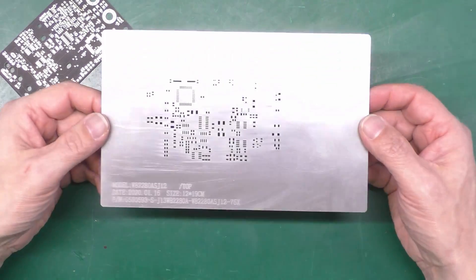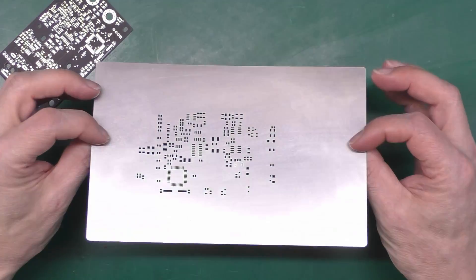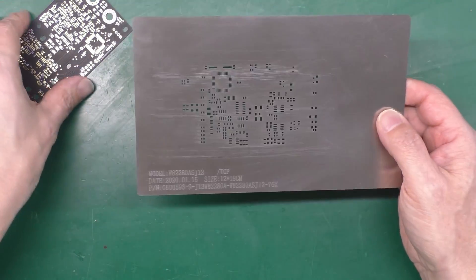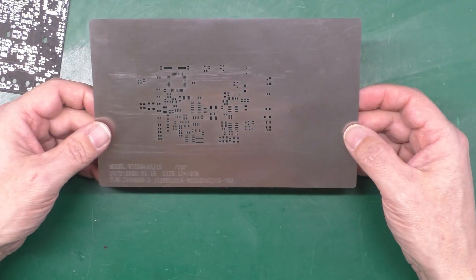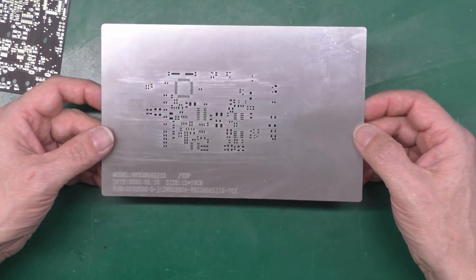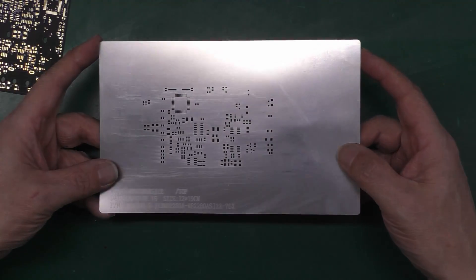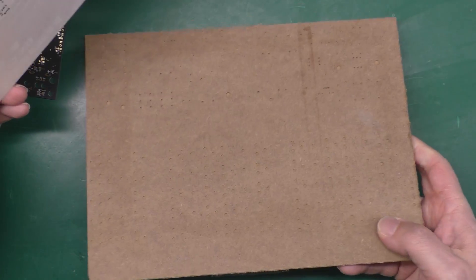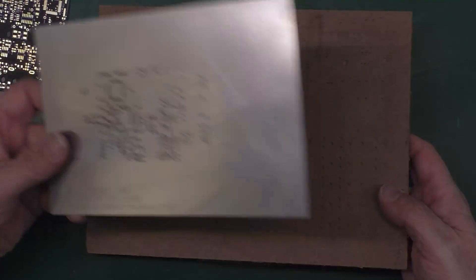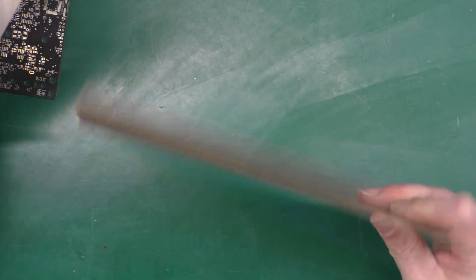So you've received your stencil from your manufacturer, in this case it's PCB Way that I use to make these PCBs, and you need to build a little rig here to hold everything in place. With PCB Way it's actually quite lucky because they ship the stencils sandwiched between two pieces of board.